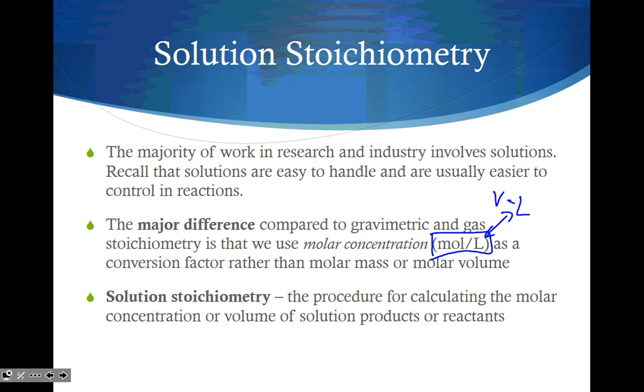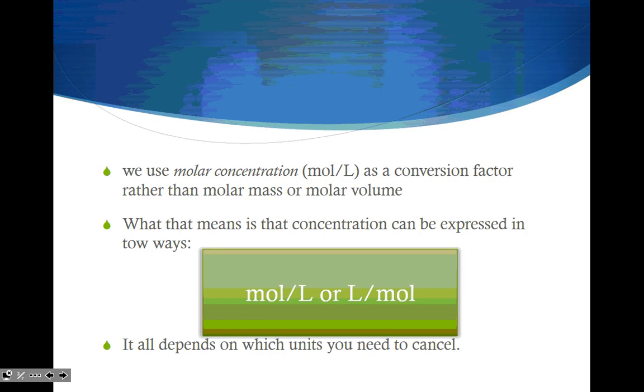Solution Stoichiometry is the procedure for calculating the molar concentration or the volume of solution products or reactants. We use molar concentration as a conversion factor rather than molar mass or molar volume. We're not looking at molar mass, we did that already. We're not looking at molar volume, we've done that already. We're just going to use molar concentration, moles per liter. What that means is that concentration can be expressed in two ways: moles over liters or liters over moles, depending on what you want to cancel out.